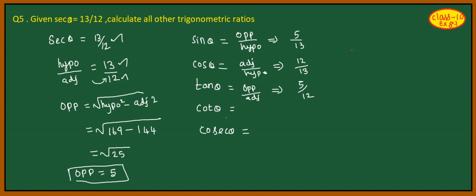Cot theta — it is the reciprocal of tan theta, so the answer is 12 by 5. Another way: what is the cot theta formula? Adjacent side by opposite side. So the answer is 12 by 5.